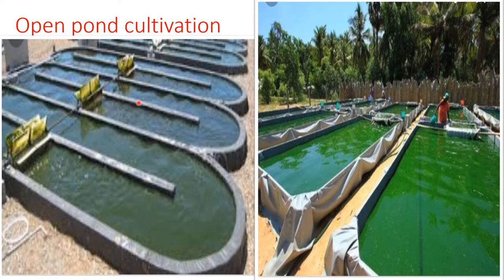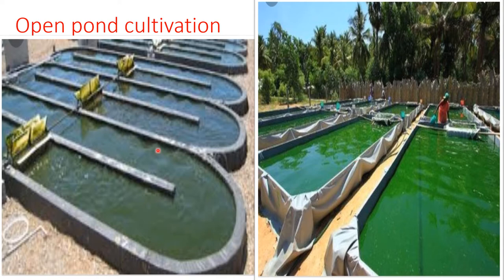There are two main advantages of culturing microalgae using an open pond system. Firstly, an open pond system is easier to build and operate. Second, open ponds are cheaper than closed photo bioreactors. The disadvantage of open ponds is that temperature and light cannot be maintained at a particular range, and the chances of contamination of the culture will be more. It is used mainly for the cultivation of algae with high oil content.